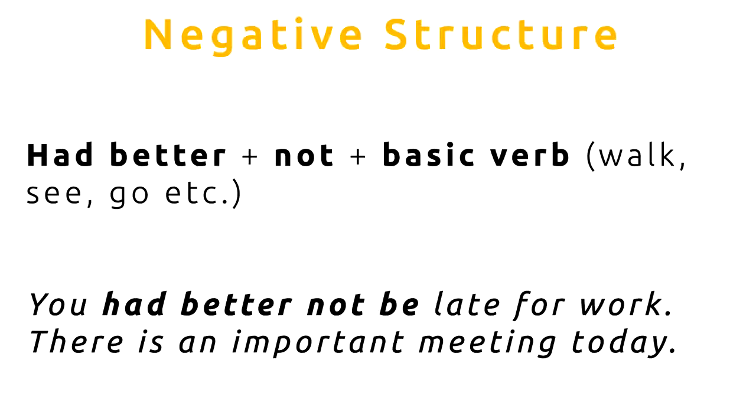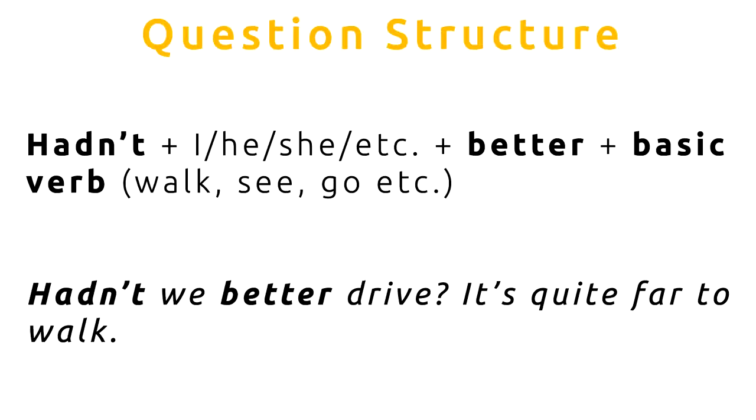And finally, the question structure. This is quite rare. We don't often use HAD BETTER in a question form, but we sometimes use it. So, here is the structure. Structure for HAD BETTER in the question form is HADN'T plus I, he, she, etc. So, you can put a pronoun here or a name of a person, plus BETTER plus a basic verb. So, the question below says, Hadn't we better drive? It's quite far to walk.